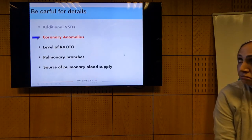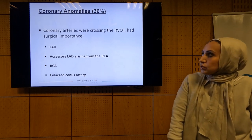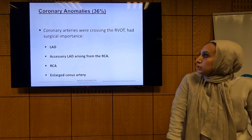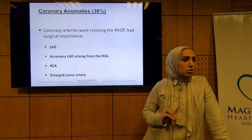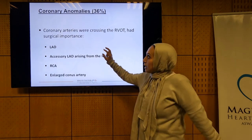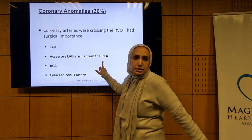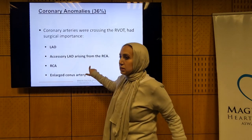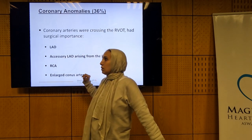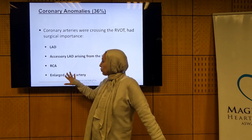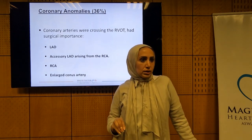Coronary anomalies are also not uncommon in Tetralogy of Fallot — about 36% of patients have abnormal coronaries. They may have bridging or abnormal origin. The critical anomaly we look for is a major coronary crossing the RVOT — this could be the LAD proper, a dual LAD (accessory LAD from RCA), or the RCA itself. The question is: do we have an LAD or RCA crossing the RVOT?